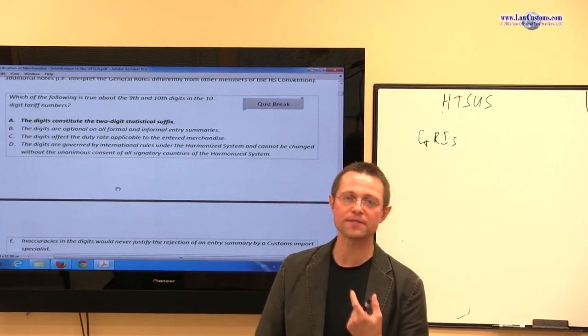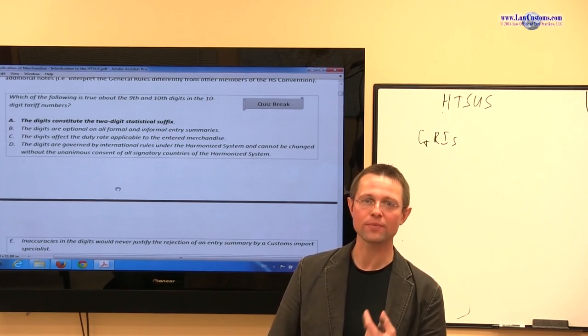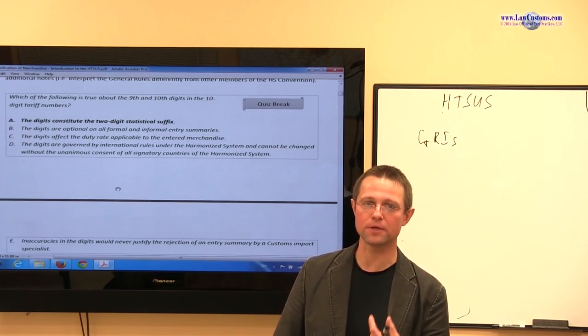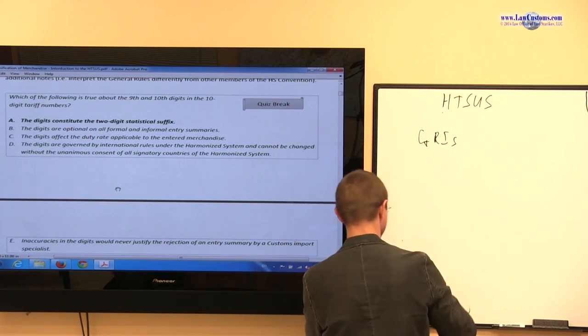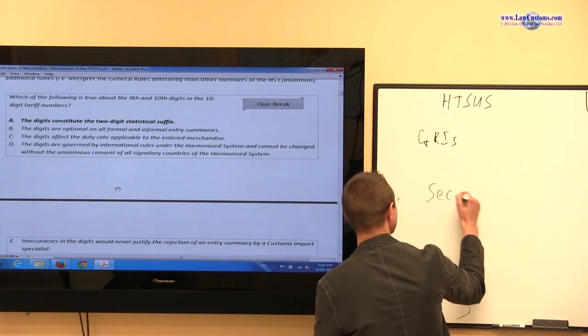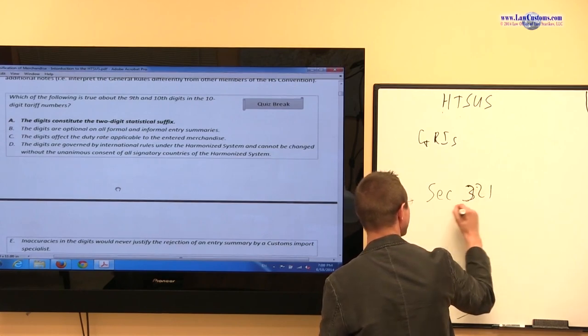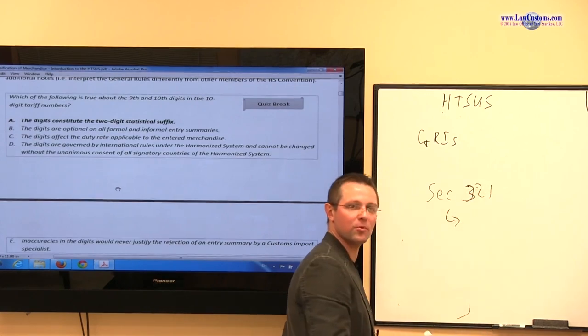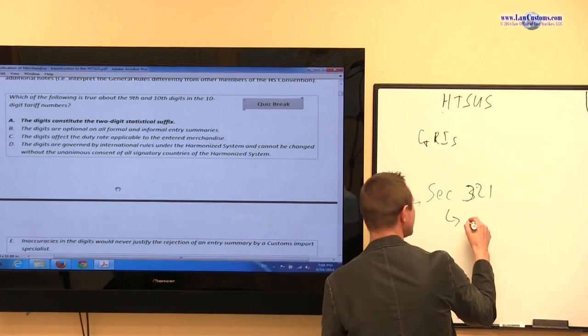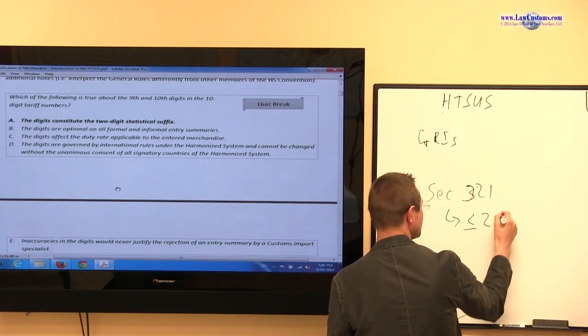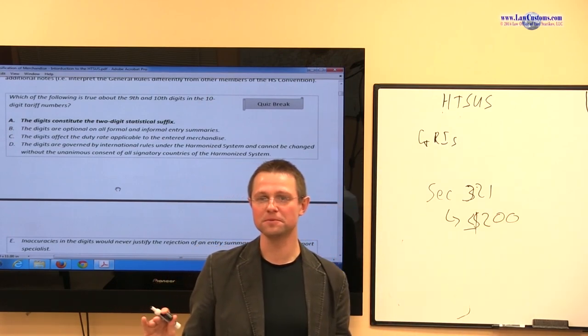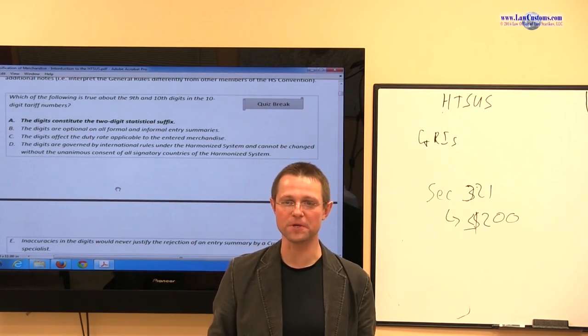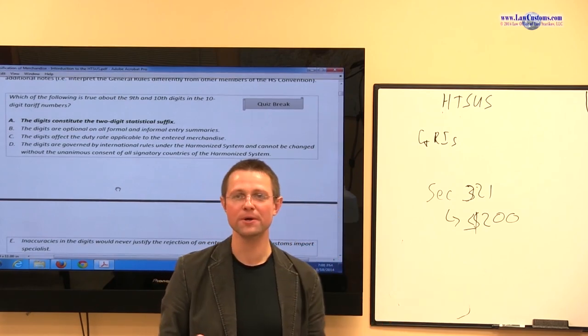such as entry under section 321 of the Tariff Act of the United States. Section 321, and this is informal type of entry for the products which are $200 or less. If you are doing this entry, it's duty free. Congress said it's duty free, just because it's just a small amount.